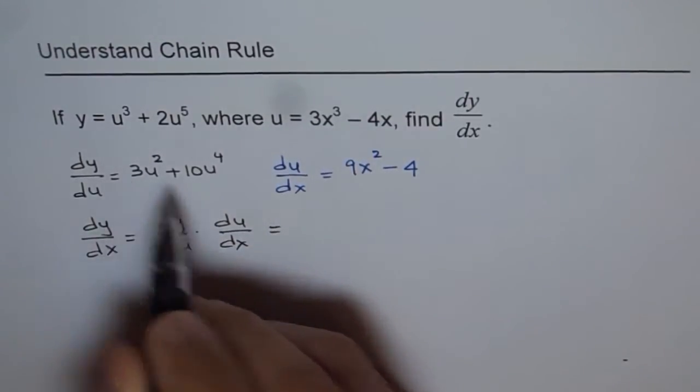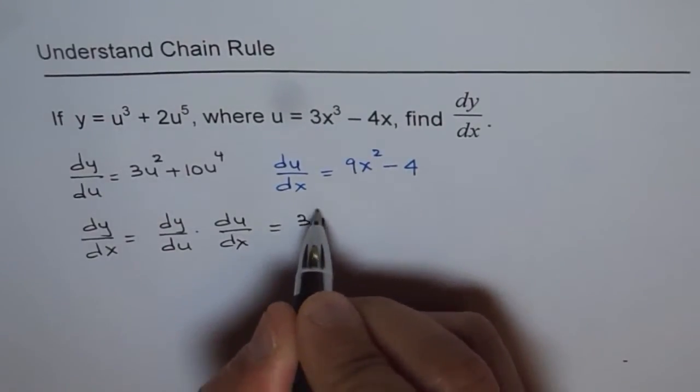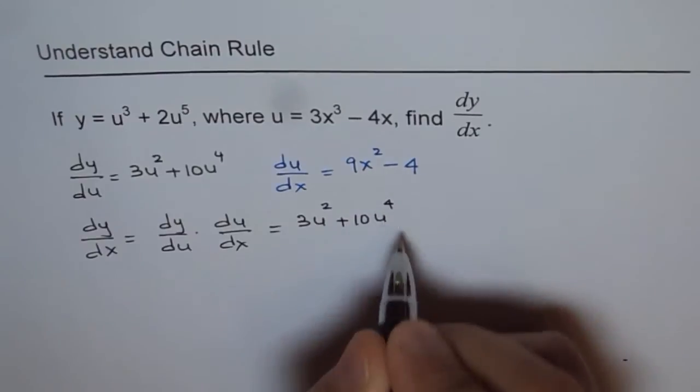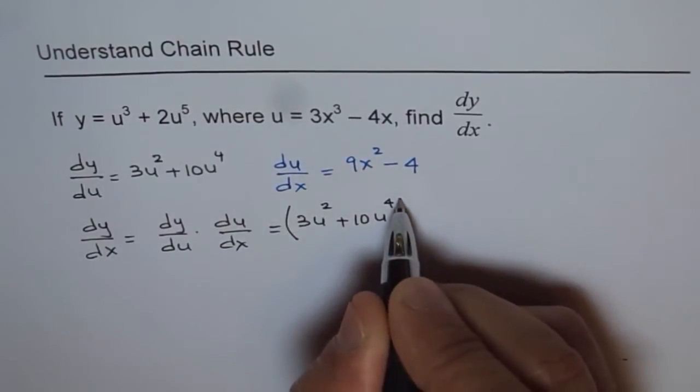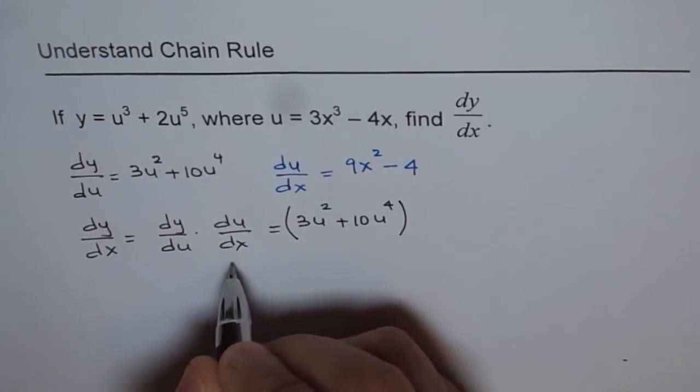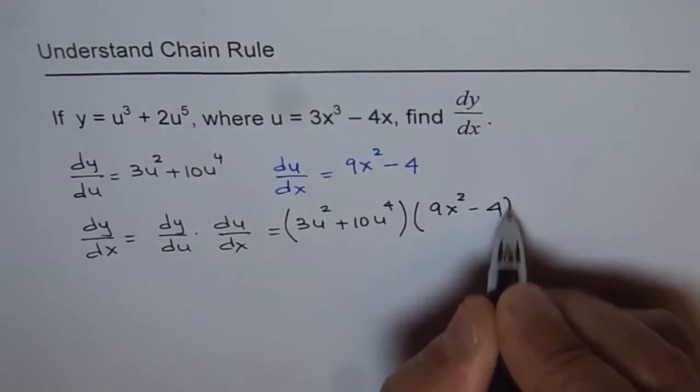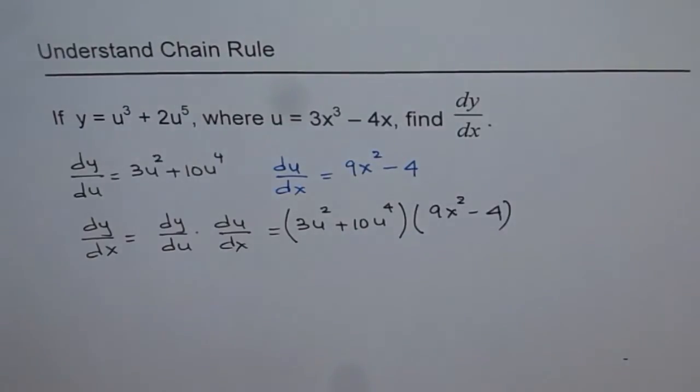We have dy by du as 3u squared plus 10u to the power of 4, and du by dx is 9x squared minus 4. That becomes the derivative of y with respect to x.